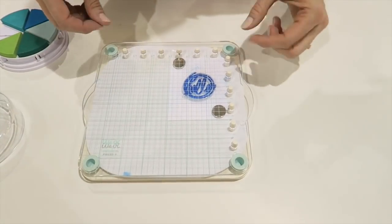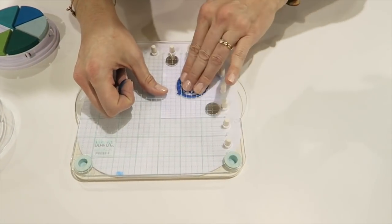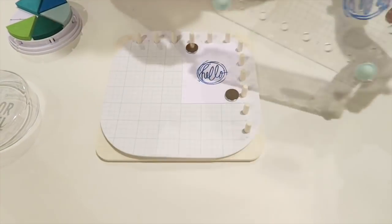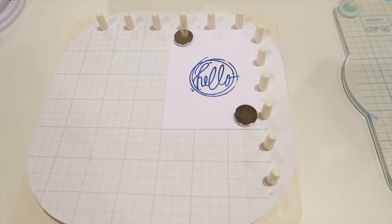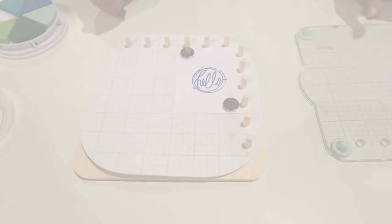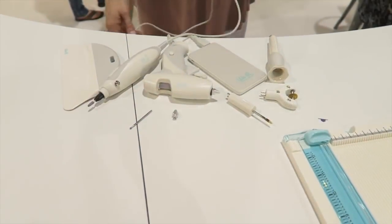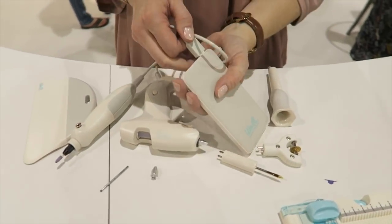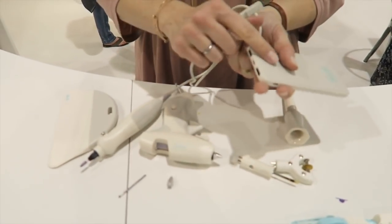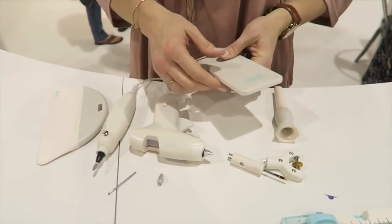These rubber knobs here help to get even pressure as you press down on your image. So you get a nice impression every time. These are the power tools. So they're powered with a USB cord and a power source so you can plug them into your laptop or your pad.